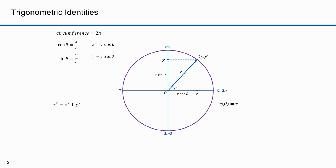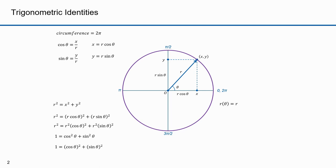The Pythagorean theorem tells us that r squared equals x squared plus y squared. We can substitute r cosine theta for x and r sine theta for y. That gives us r squared equals r cosine theta squared plus r sine theta squared. We can factor out r squared on the right-hand side, and then divide both sides by r squared. This gives us 1 equals cosine squared theta plus sine squared theta. The tangent is defined as the opposite over adjacent — that's y over x. We can substitute r sine theta for y and r cosine theta for x. r over r equals 1, so tan theta reduces to sine theta over cosine theta.